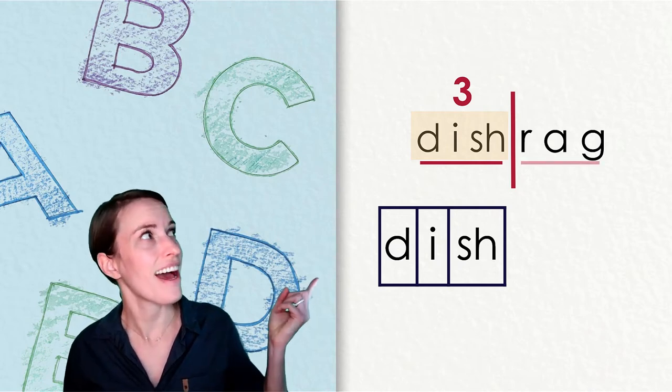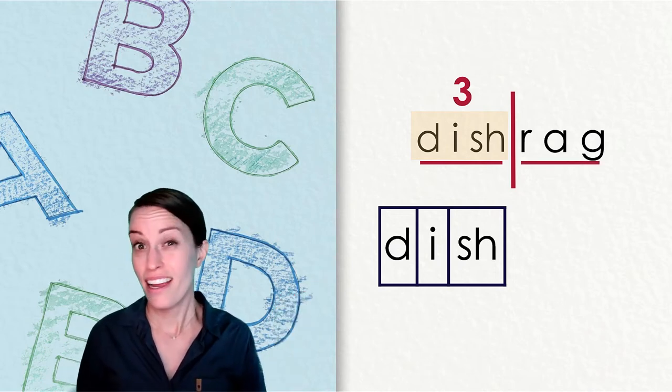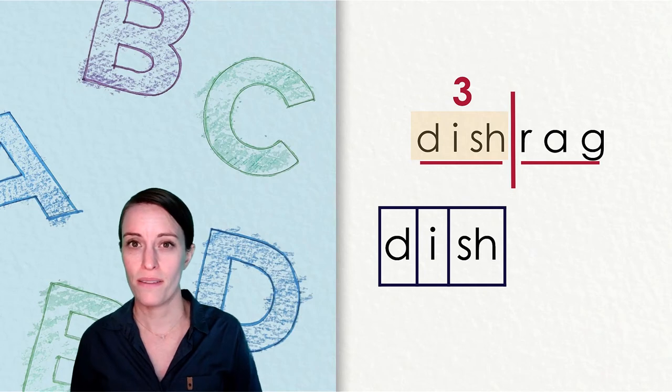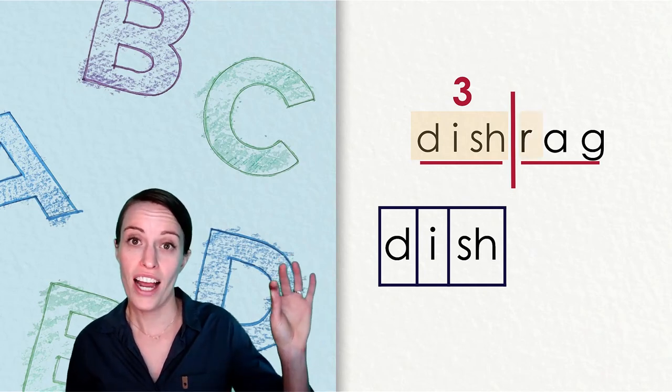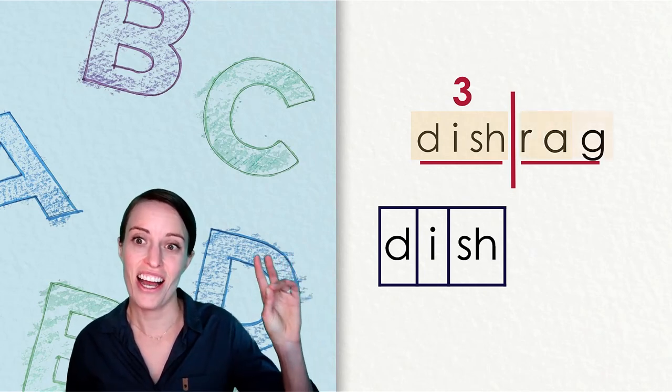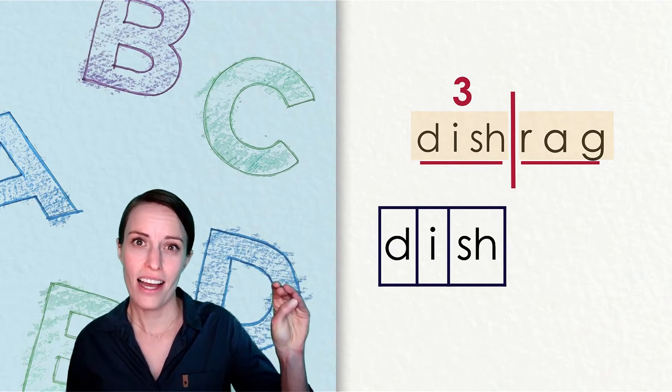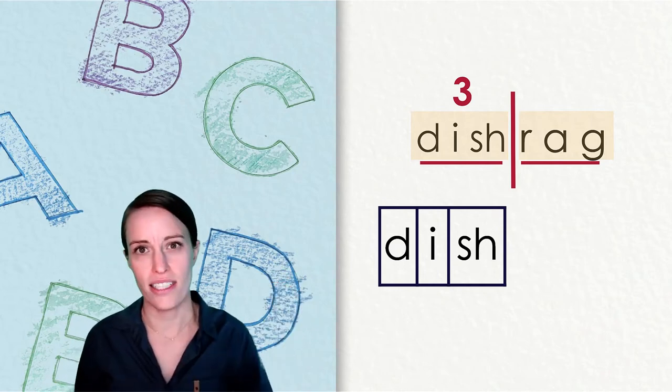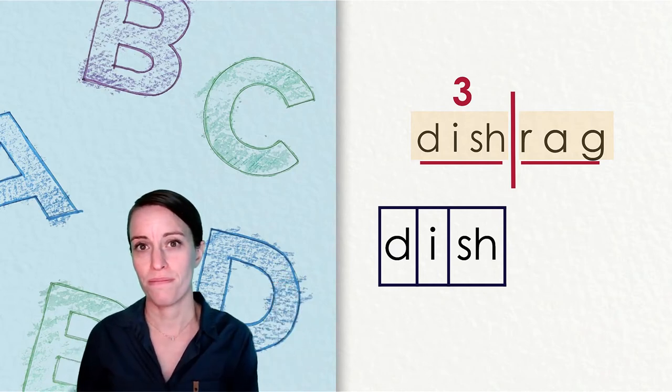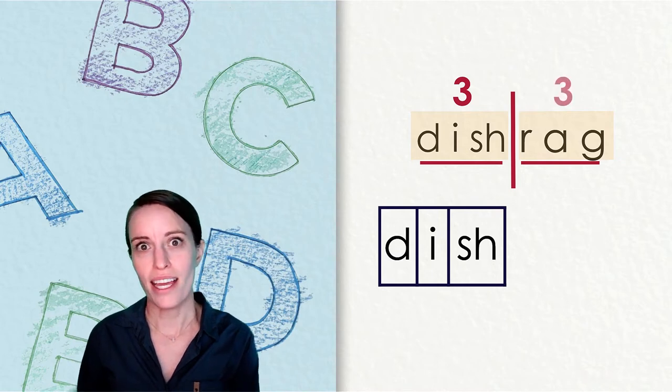Now let's look at our second syllable. Can you tap that out with me? R-A-G. Rag. How many sounds were in our second syllable? That's right. There were three.